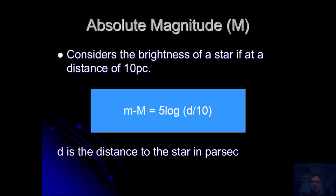What does come up in test is the given formula if we consider the brightness of the star if it's at a distance of 10 parsecs. Therefore if we do some calculations, the apparent magnitude minus the absolute magnitude equals five times the log of d, the distance to the star in parsecs, divided by 10.